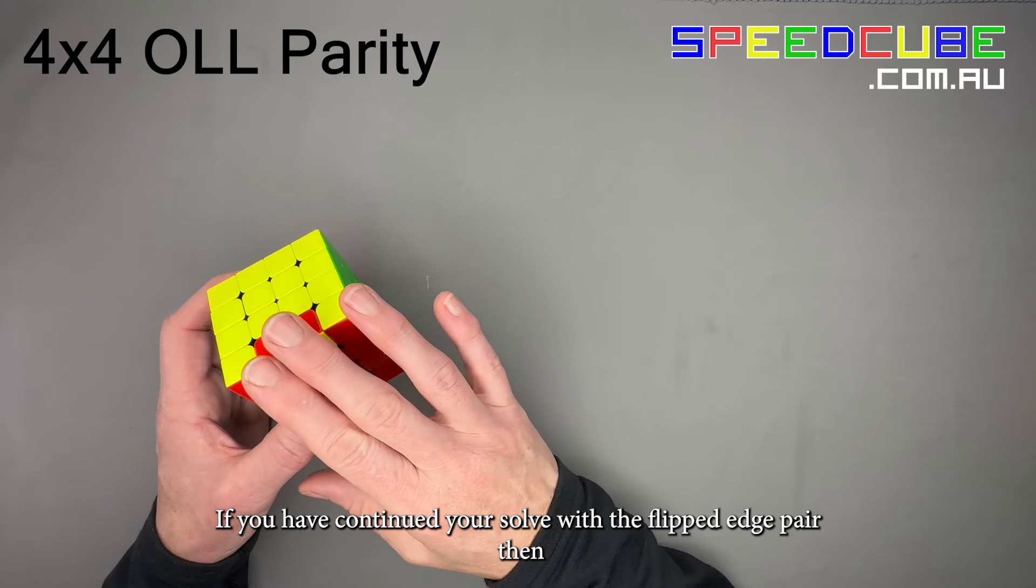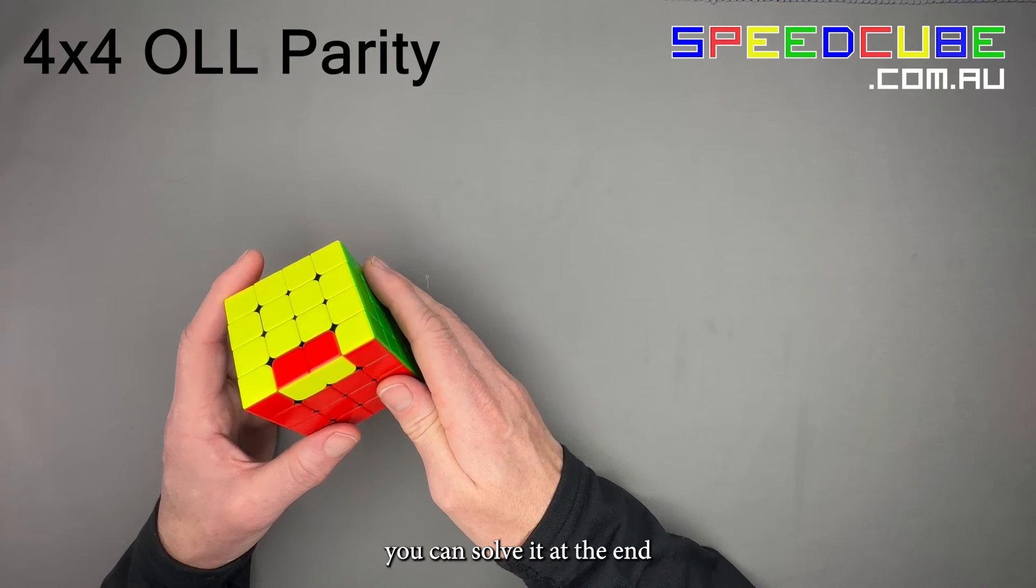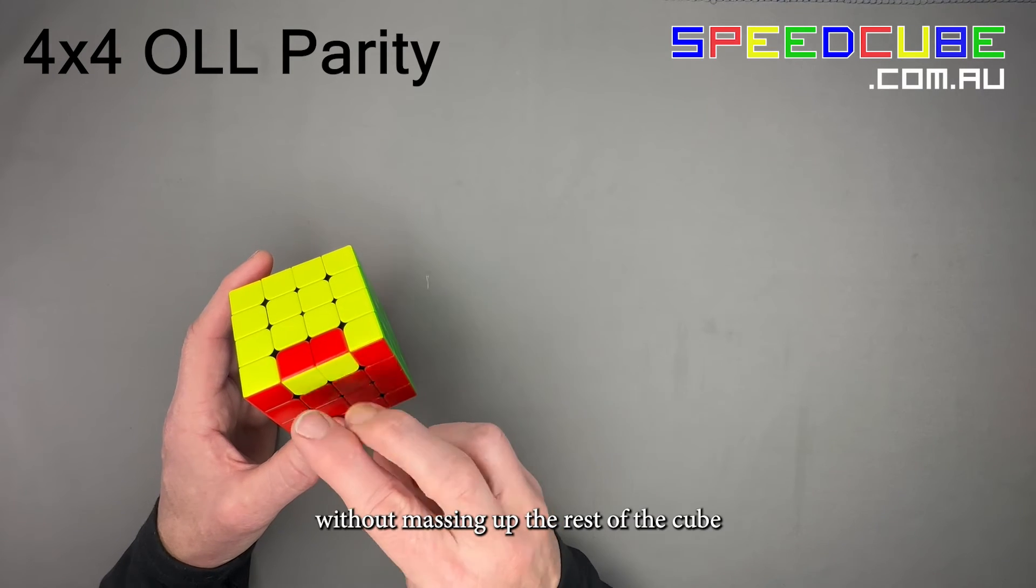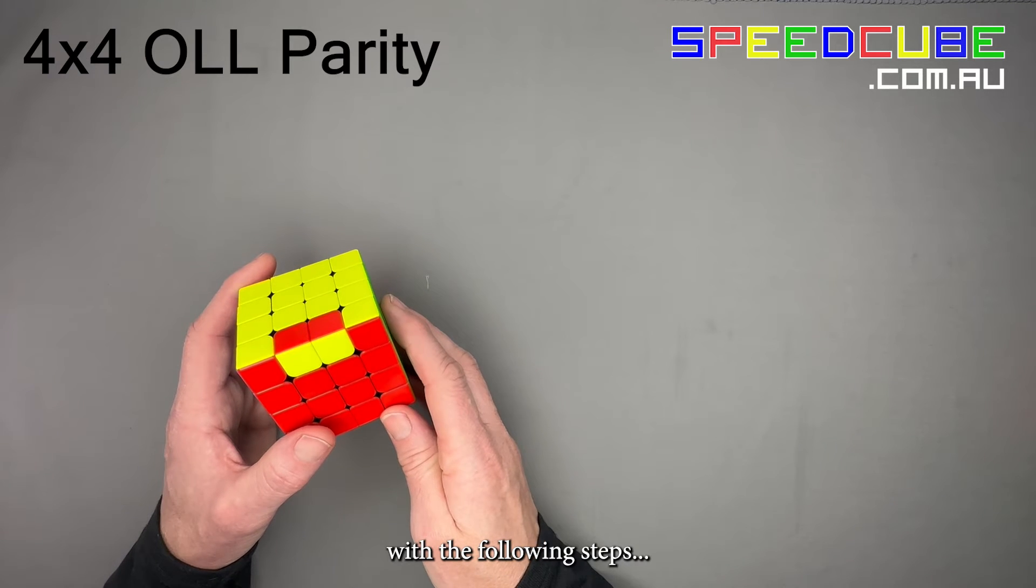If you have continued your solve with the flipped edge pair, then you can solve it at the end without messing up the rest of your cube with the following steps.